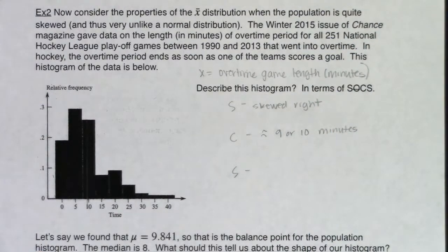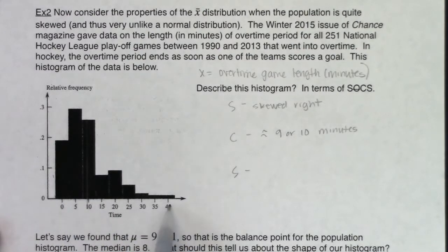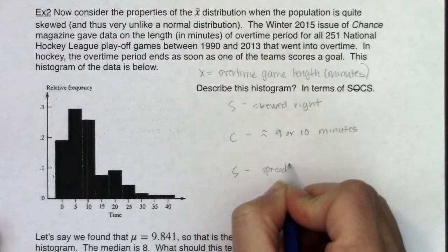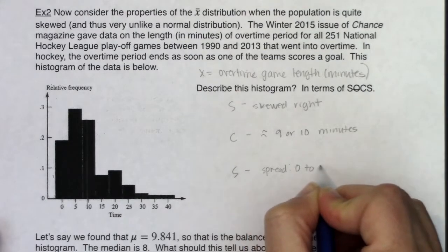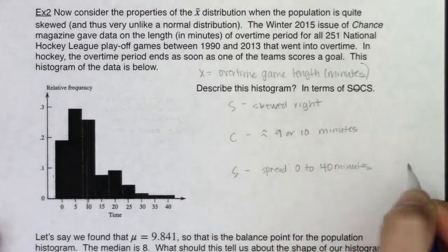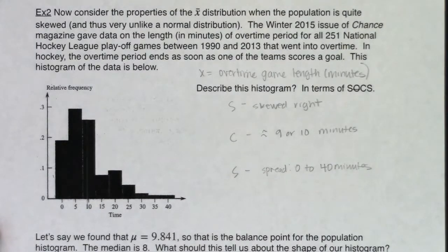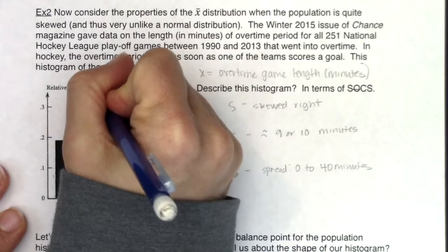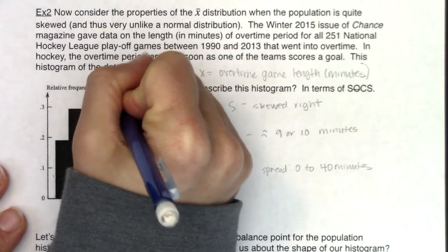I wasn't given the raw data so I don't know the standard deviation, but I can at least talk about the spread. The spread looks like it's around 0 to 40 minutes. So that would be my SOCS — again, a chapter two problem. I do want to point out that this was all of the overtime hockey games, so we're now going to refer to this as our population distribution.